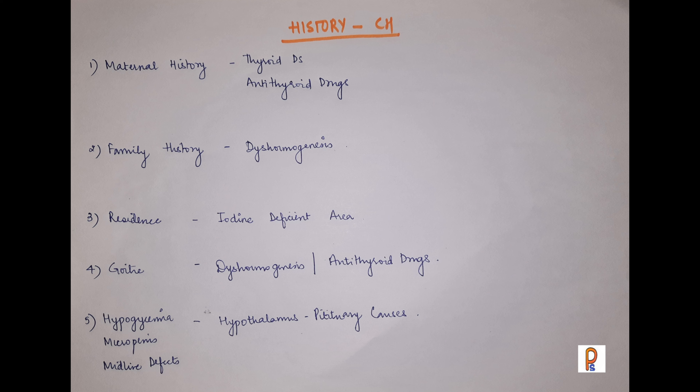Presence of goiter suggests dyshormogenesis or maternal antithyroid drug intake. If there is hypoglycemia, micropenis, or midline defect, that points towards a secondary cause of congenital hypothyroidism — occurring due to a defect in the hypothalamus or pituitary. Midline defects along with other features point towards a central cause of congenital hypothyroidism.